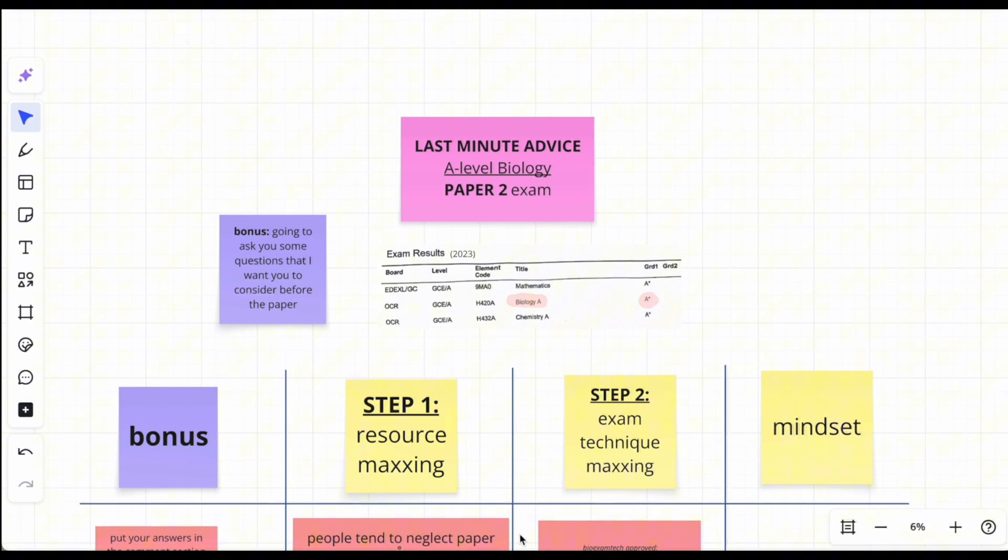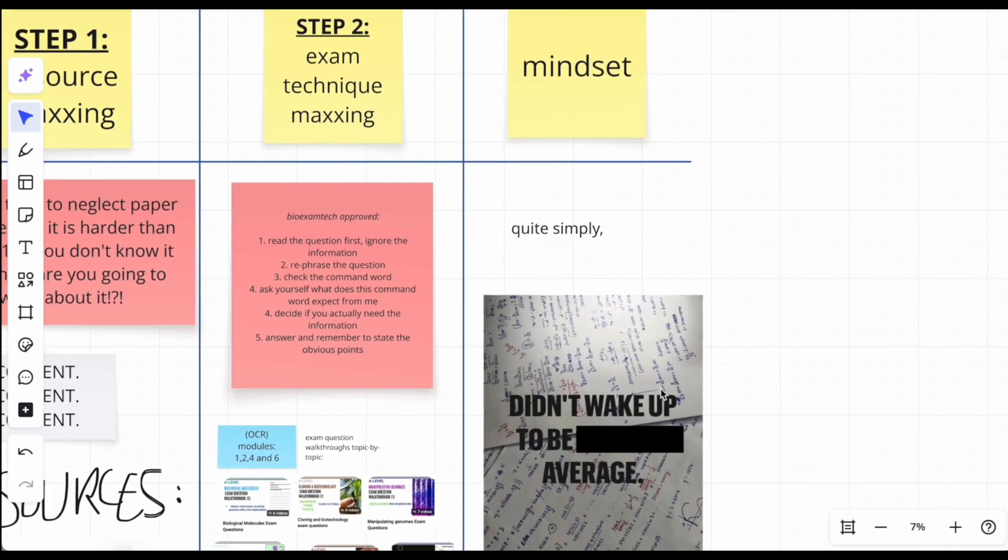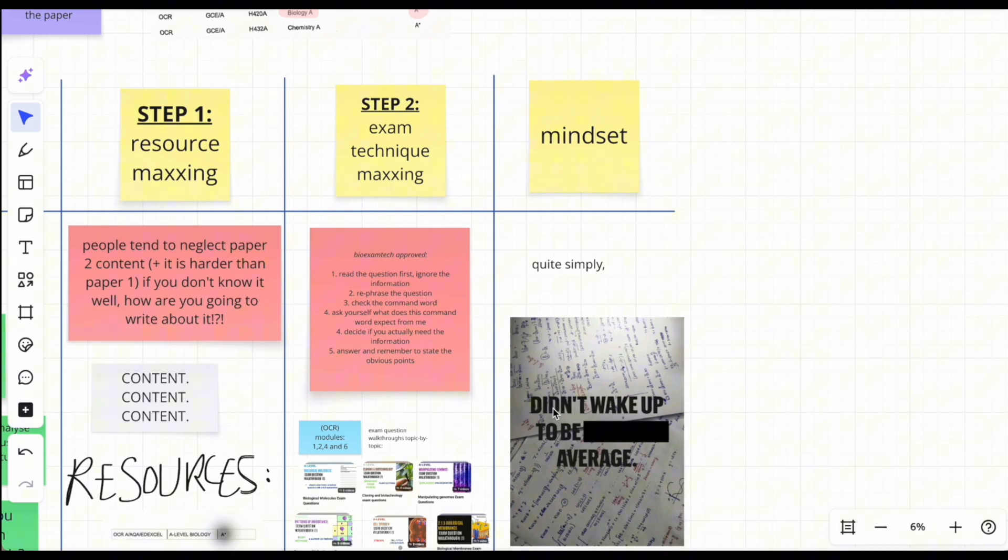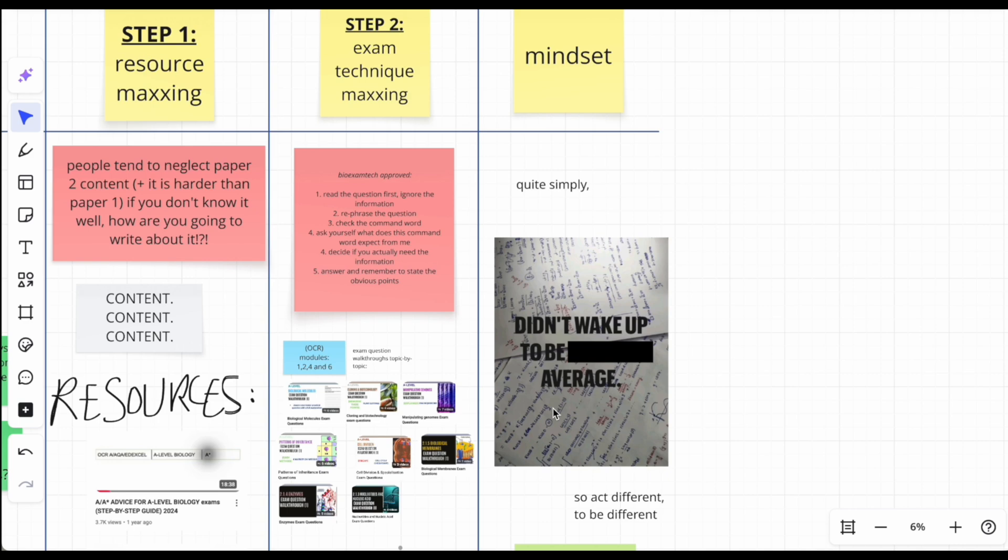You cannot dwindle on the past because genuinely you're not going to get any gains from it. And sometimes acknowledge your feelings but also dismiss it because you actually don't have time, you really don't. So welcome to the last minute advice A-level bio paper two exam. I am going to start off with the mindset just for today. Mostly because I know how everyone felt after paper one. Quite simply, you didn't wake up today and you didn't wake up all the other days in your life to just be average.